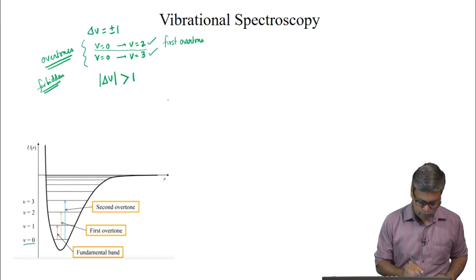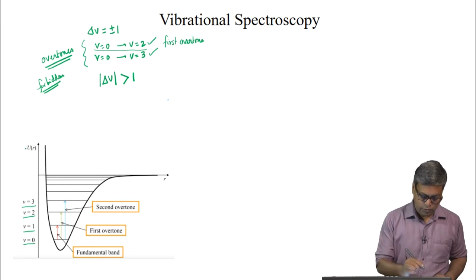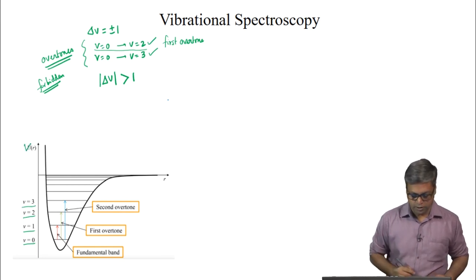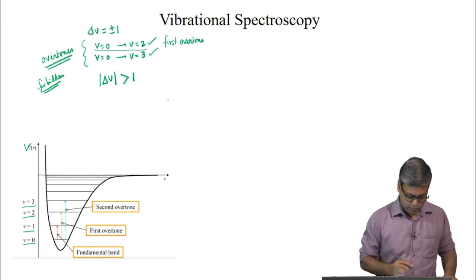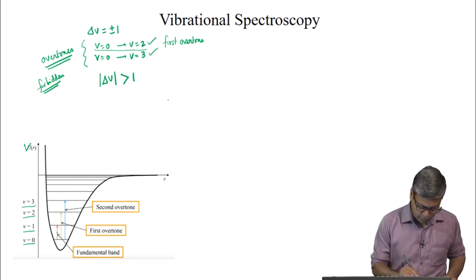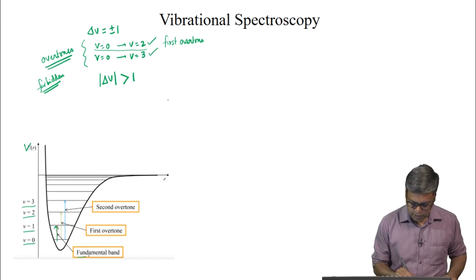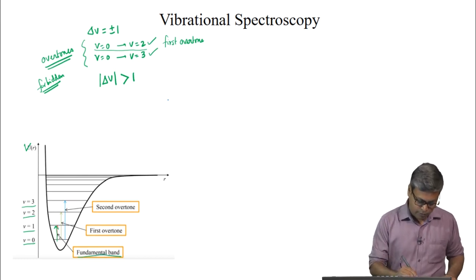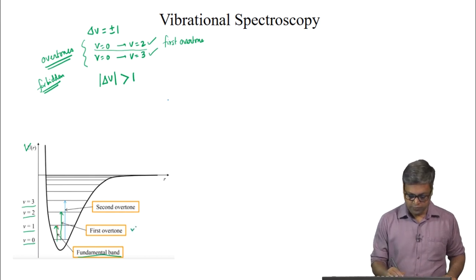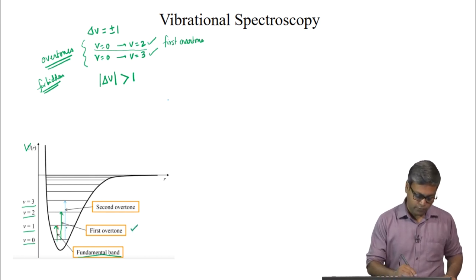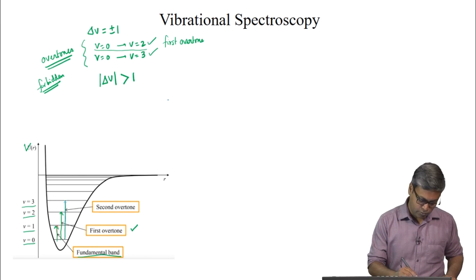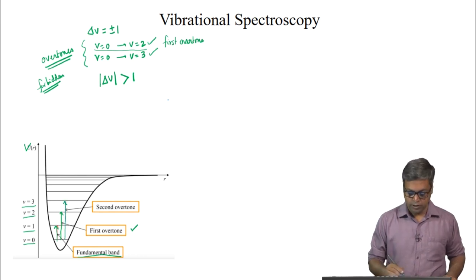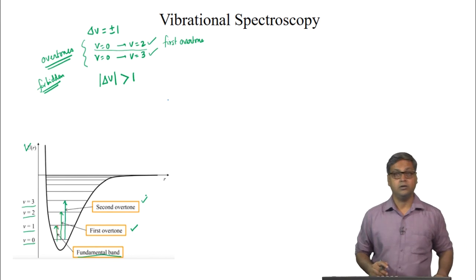As we can see, we have levels v=0, v=1, v=2, v=3 plotted in V(r). The transition from v=0 to v=1 is the fundamental band, from v=0 to v=2 is the first overtone, and from v=0 to v=3 is the second overtone.